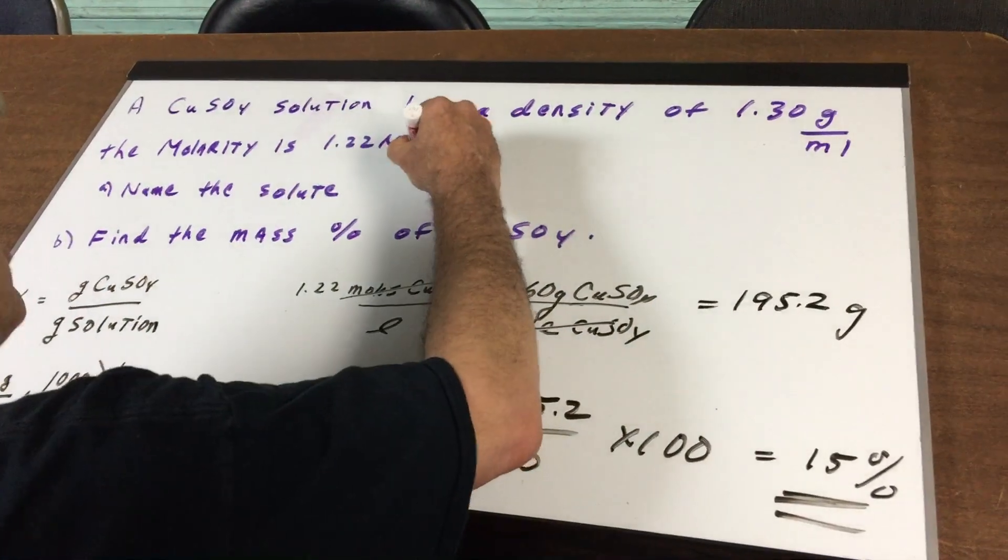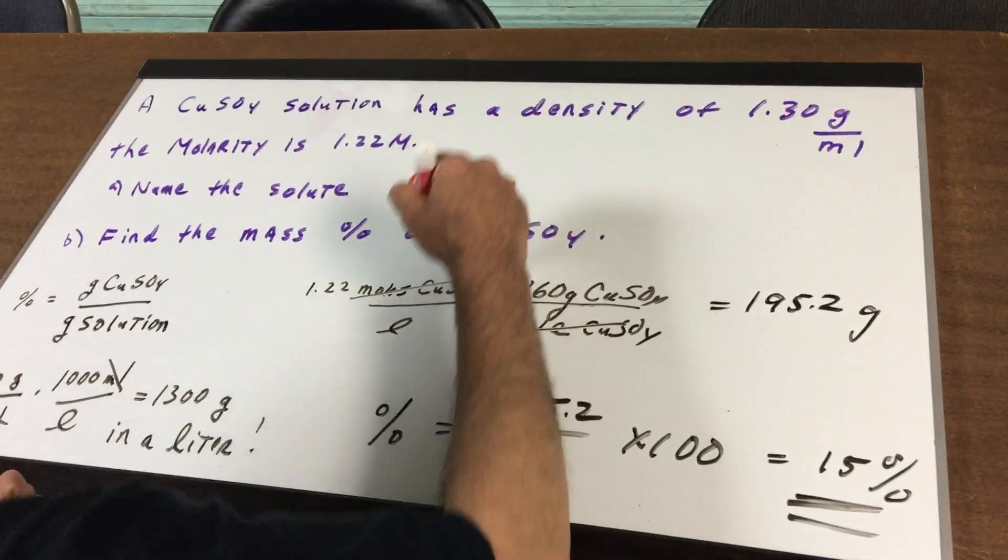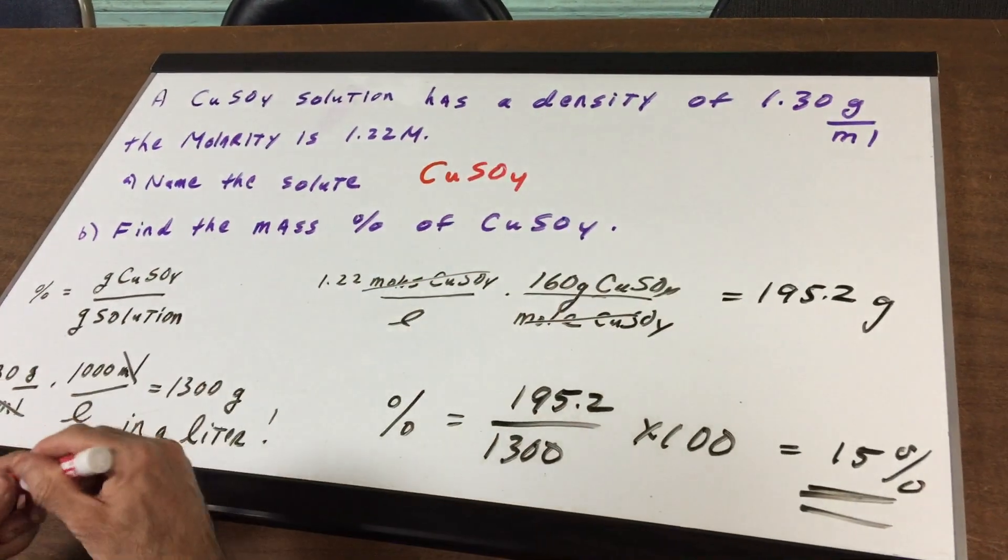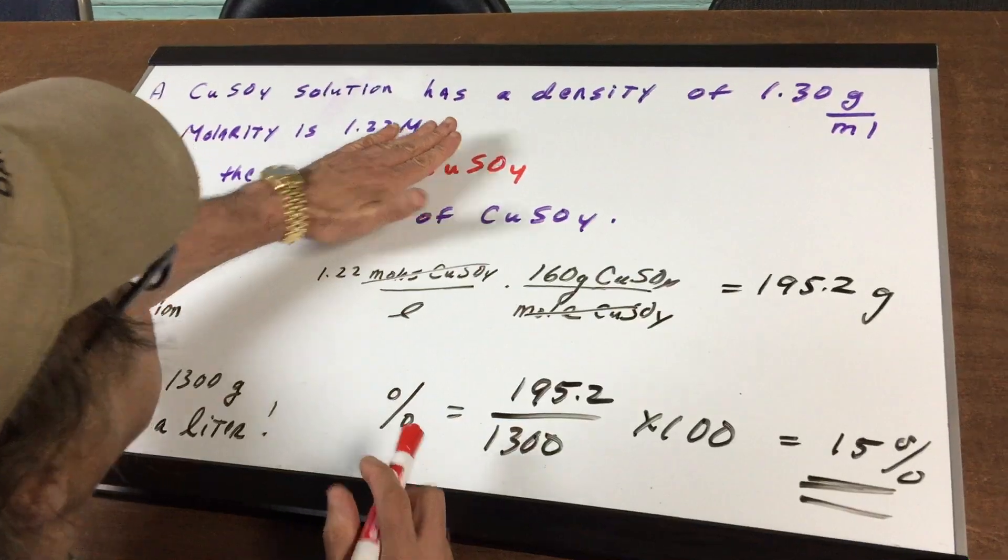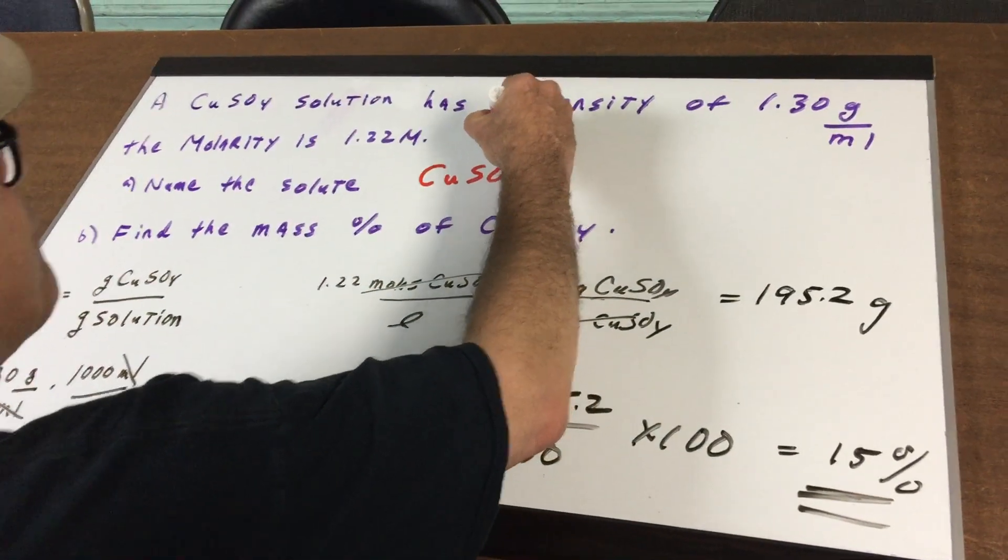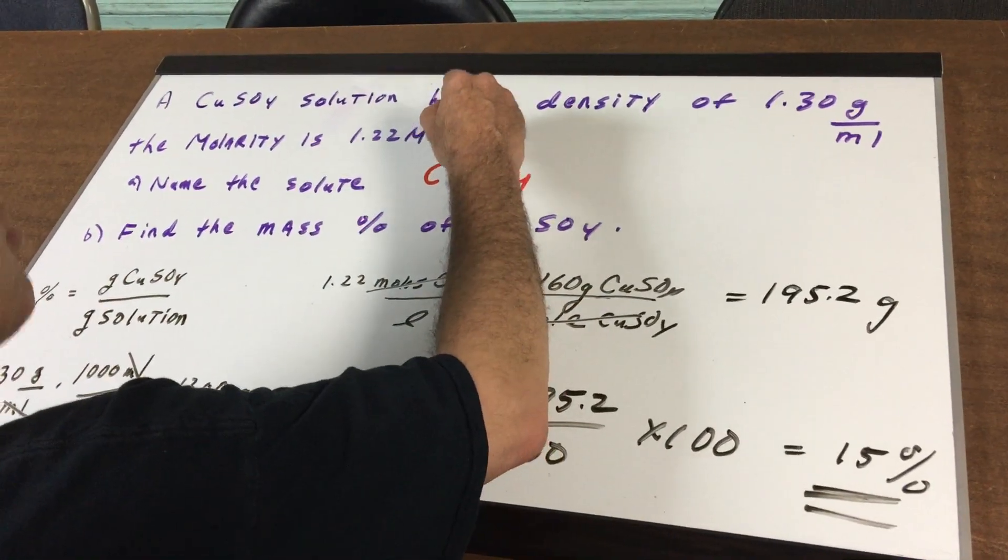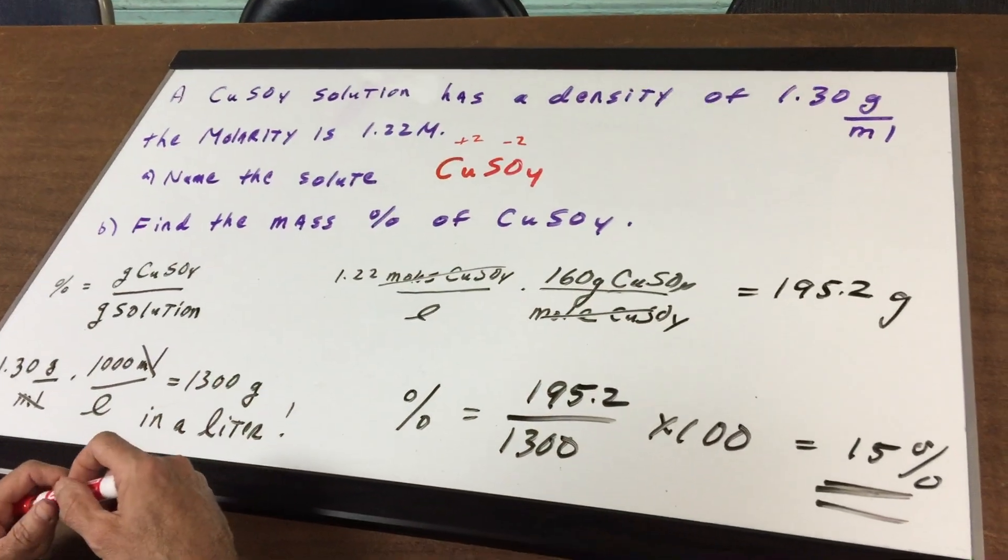Well, the minute you see CuSO4, we know that this is a copper sulfate. If you put your hand over this, you should remember that sulfate has a minus two charge and copper therefore would be plus two.